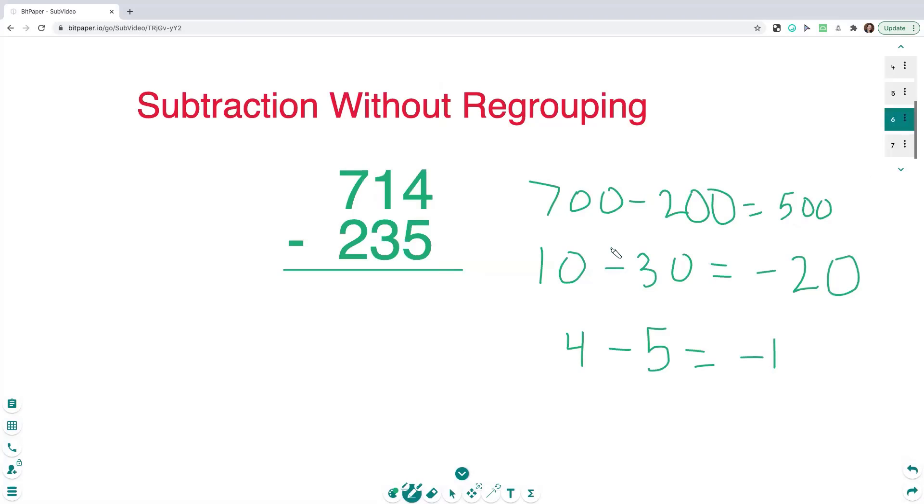So what we have to do is we have a positive 500. This is the first part of my answer so far. And then I have a negative 20. This is the same as subtracting 20. So I have 500 minus 20. And this is great mental math practice for your students too. 480. So far 480 is my answer. But then I have this negative 1 from the ones, the 4 minus the 5. The negative 1 is the same as subtracting 1. I'm left with 480 minus 1, which is 479.